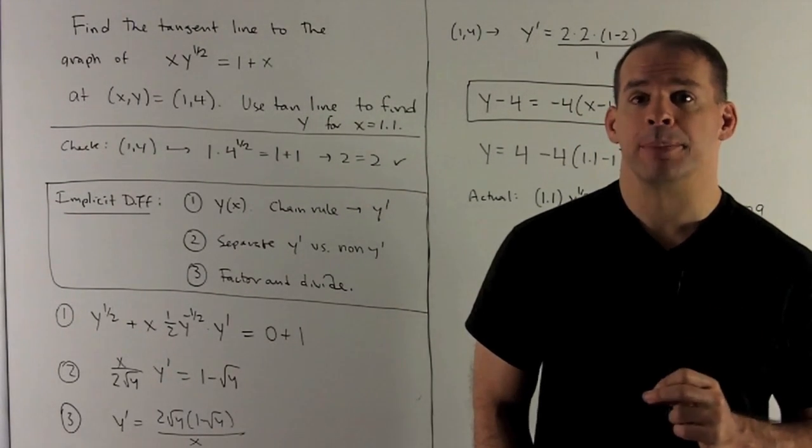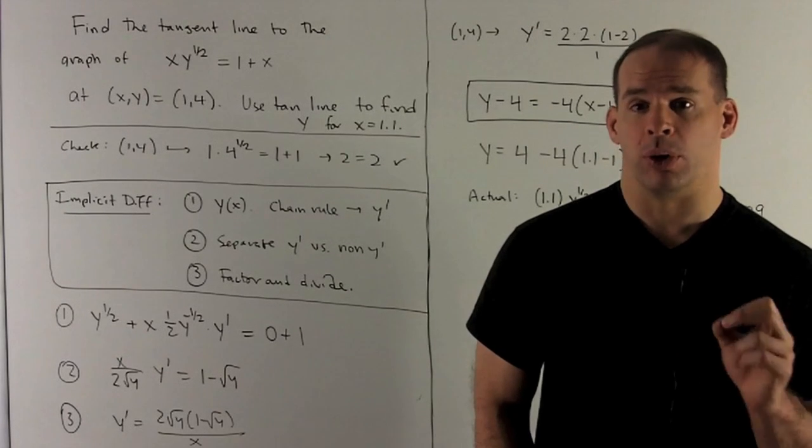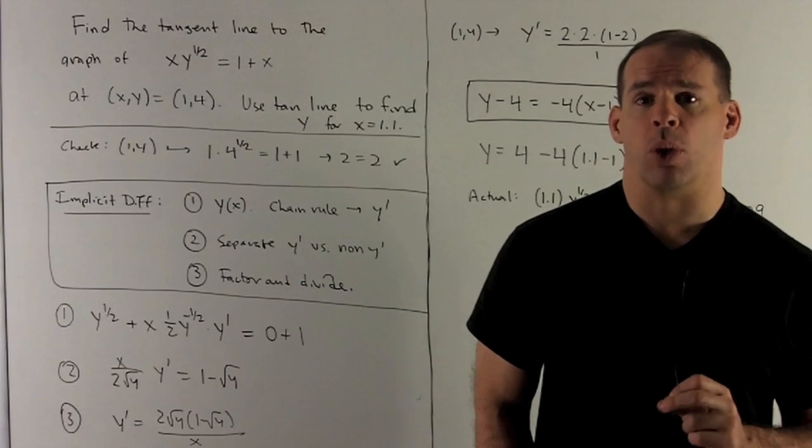Once you have that, use the tangent line to approximate the point on the graph where x equals 1.1.